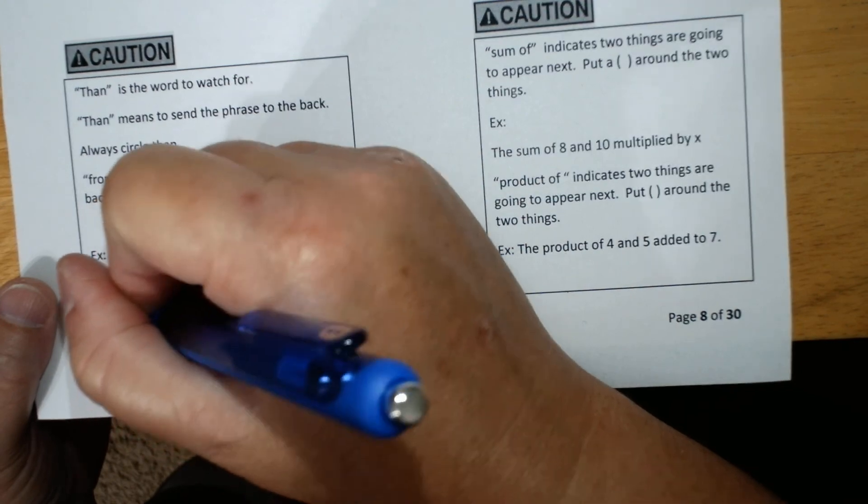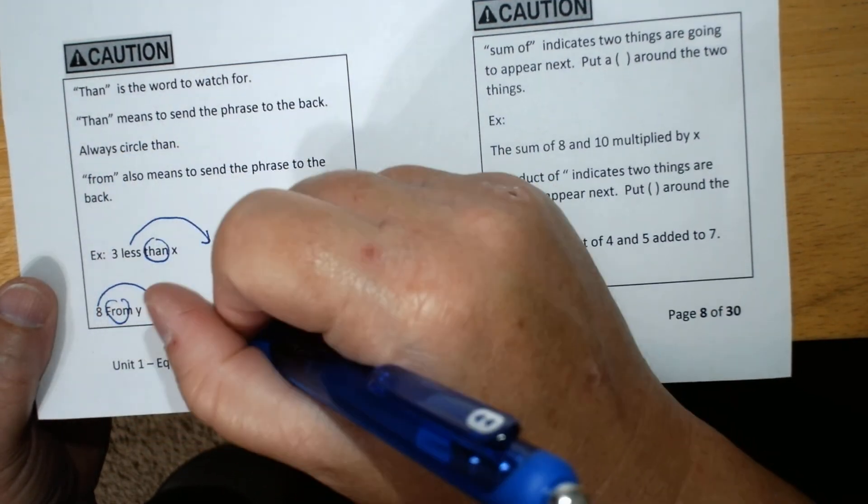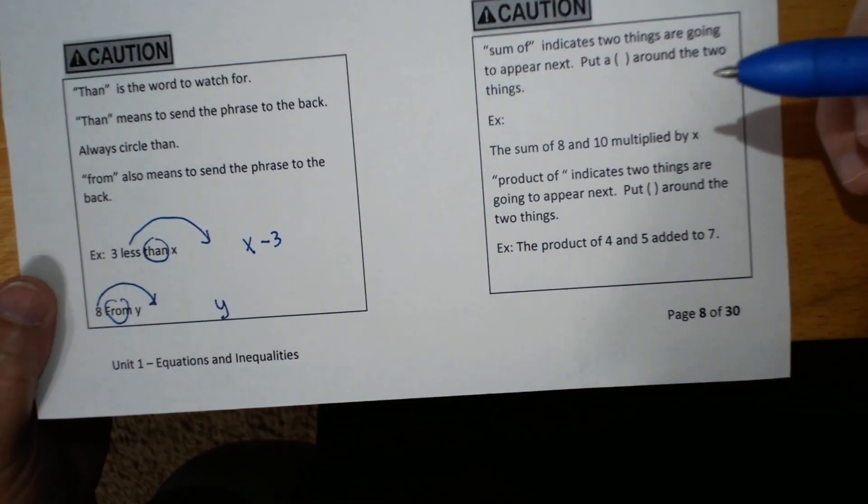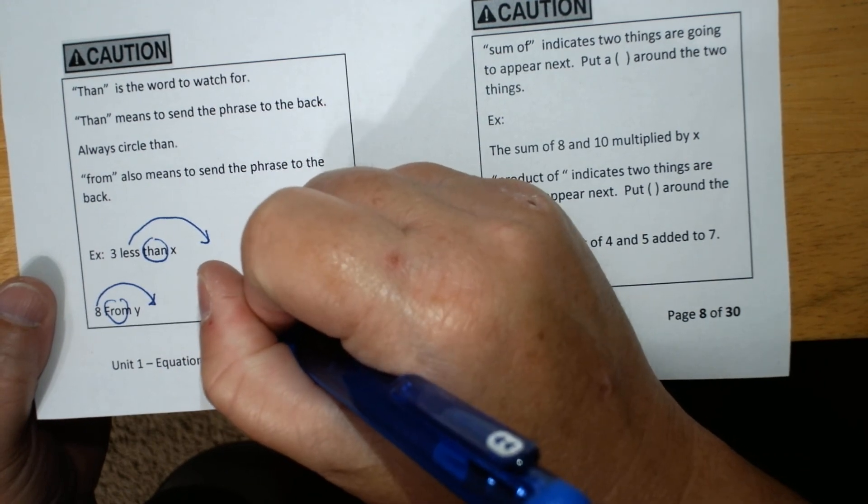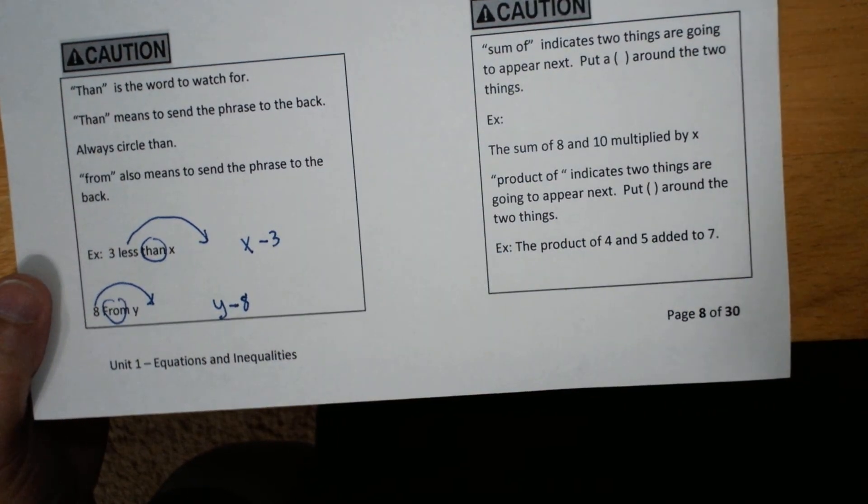A from Y, you circle it. You throw that to the back. You start with the Y. Minus eight. And that is the phrase.